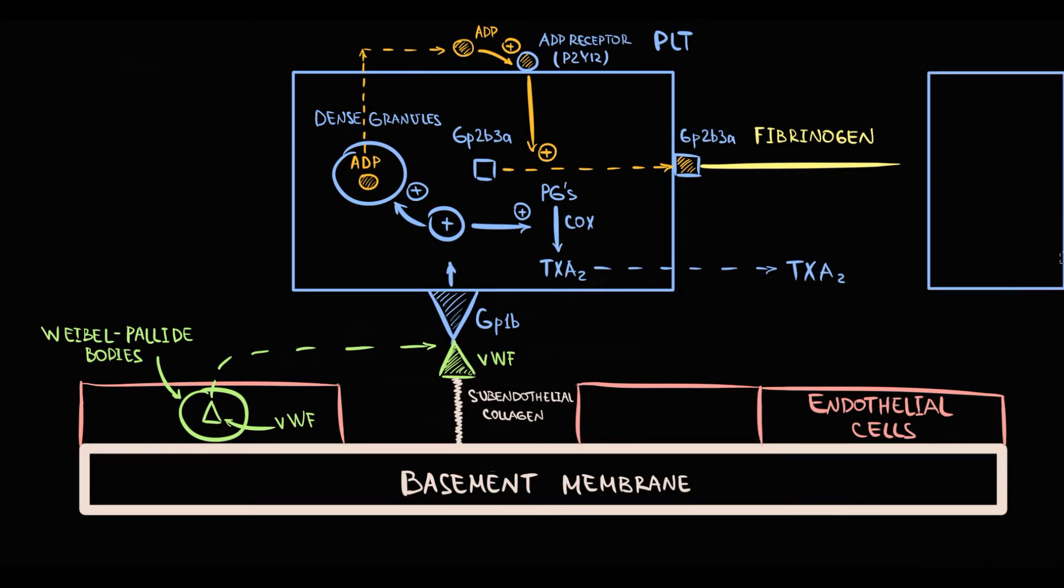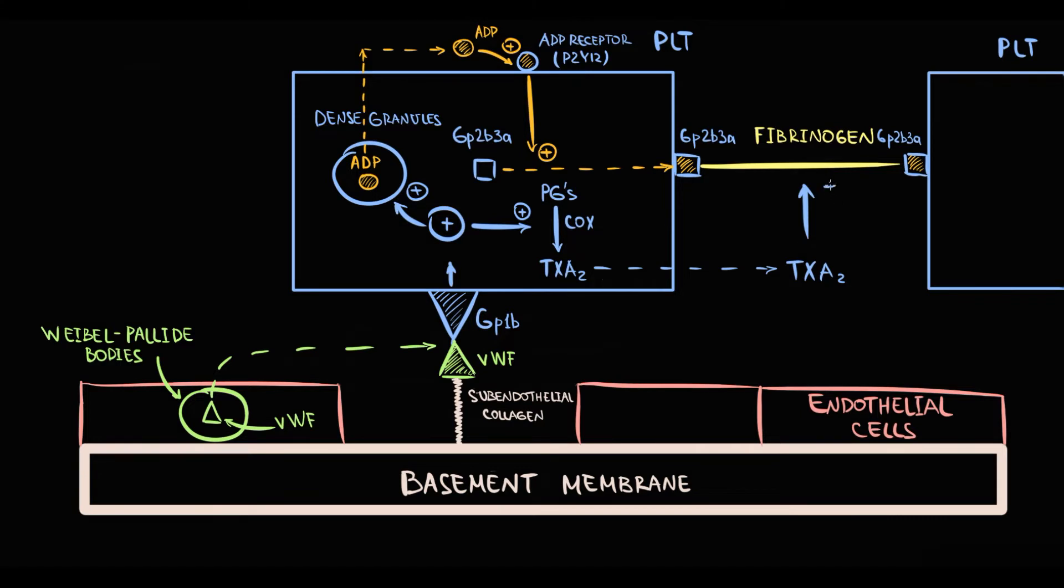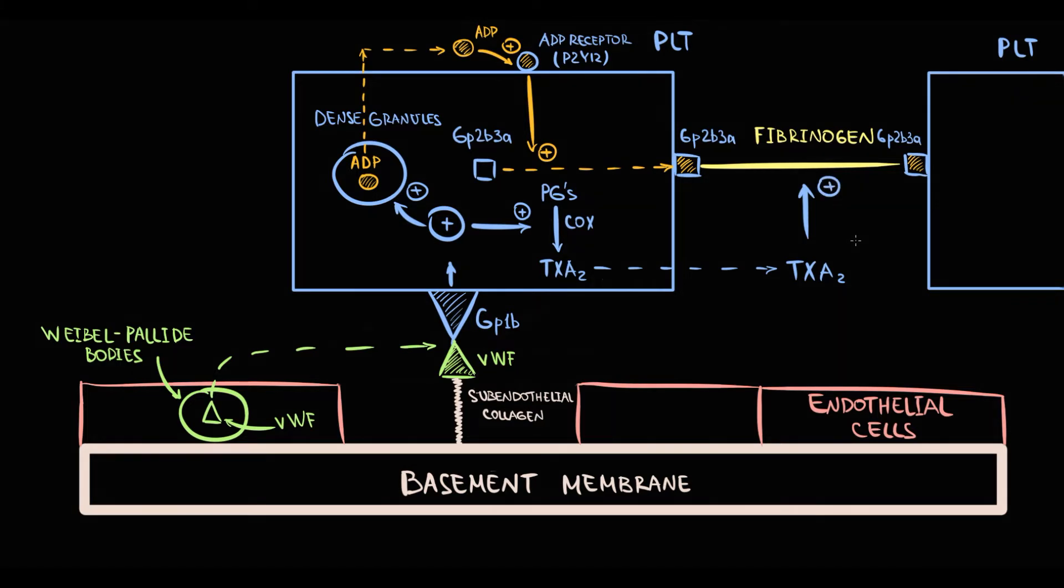When another platelet comes to the site of injury, it immediately binds by GP2B3A to fibrinogen. This process is significantly accelerated by thromboxane A2. This binding occurs over and over again until a platelet plug is formed. Exactly this gathering of platelets at the site of injury is called aggregation.